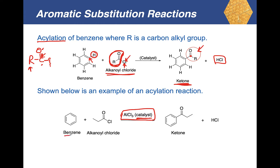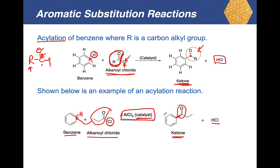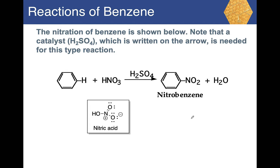Here is benzene and the acyl chloride reactant. The chlorine bonds with one of the hydrogens to give HCl, and here is the acyl group, which bonds to that carbon. The product is a ketone because the carbonyl group — the carbon-oxygen double bond — is bonded to two R groups.